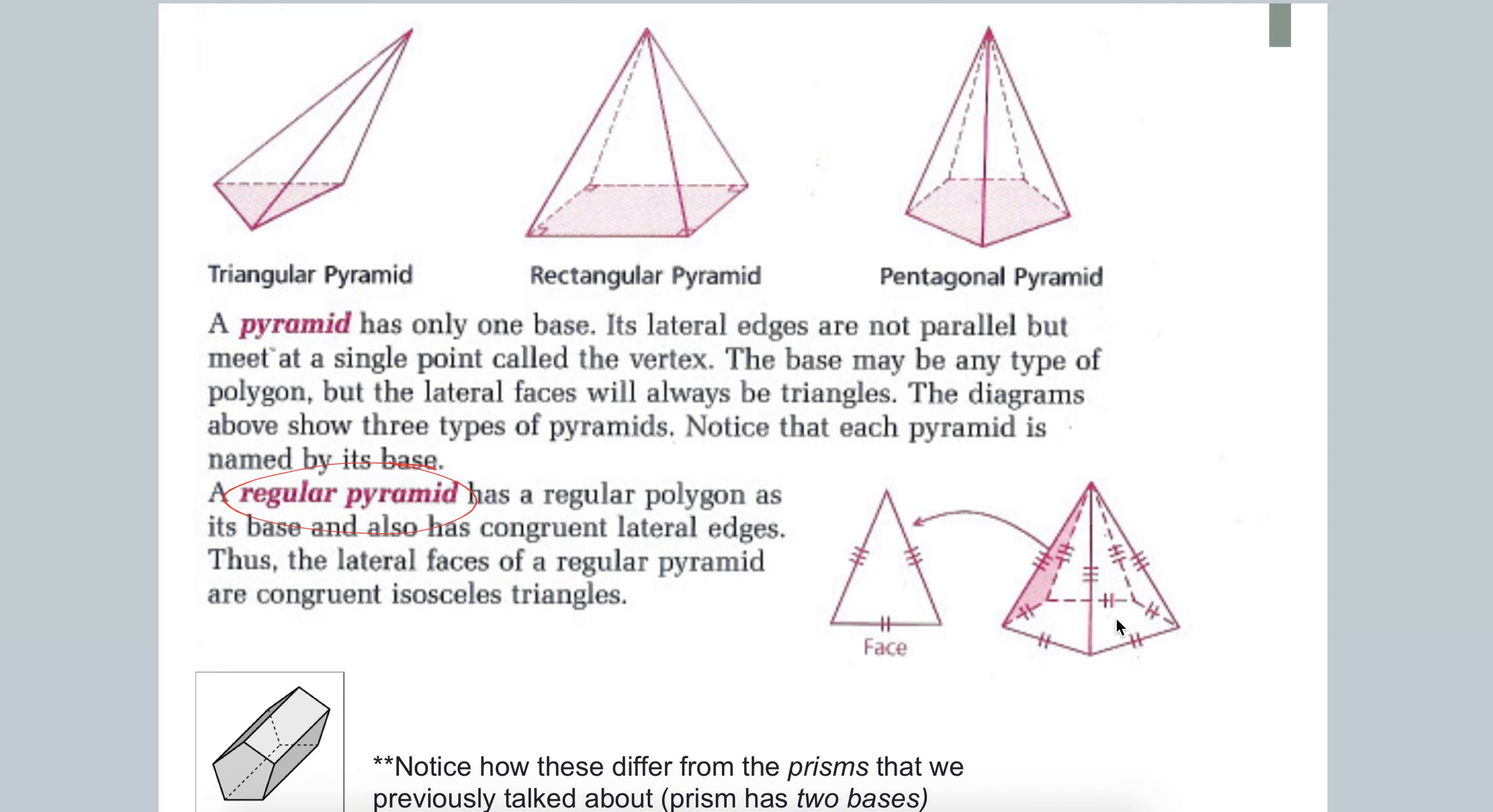A couple other vocab terms. So we call this, I'm going to look at this rectangular pyramid as an example. So we call this length, and this length, we call those lateral edges.